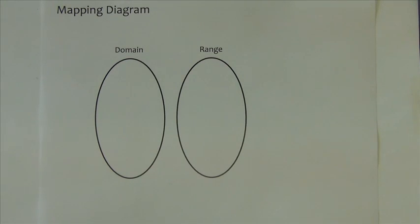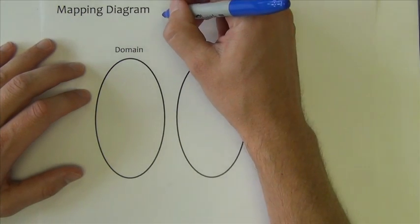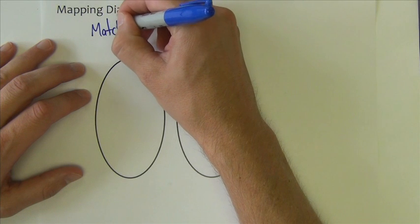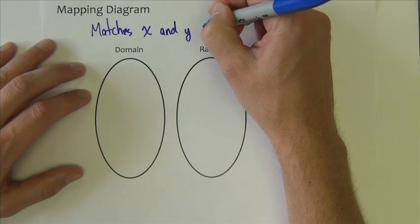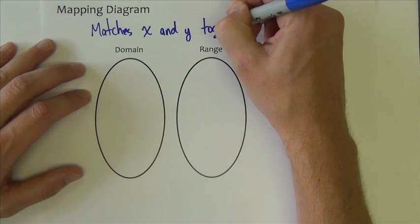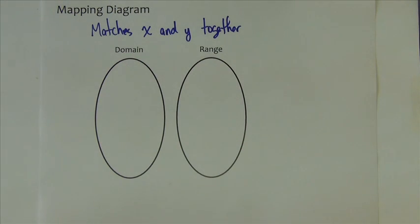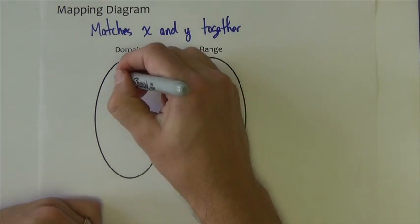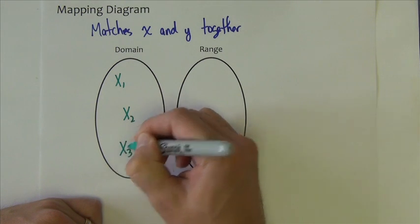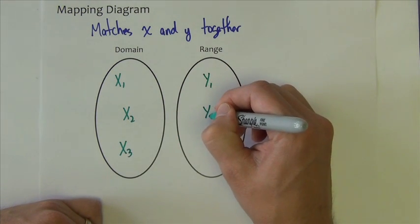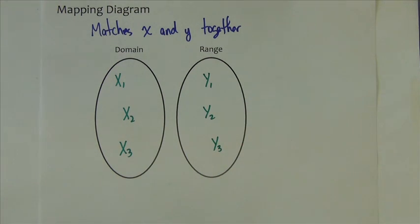Oftentimes you'll be shown a relation or even a function for that matter with a mapping diagram. A mapping diagram just simply matches x and y's together or domain and range values together. So, for example, you might have x1, x2, x3, y1, y2, y3. So, we've got three x numbers, three y numbers.